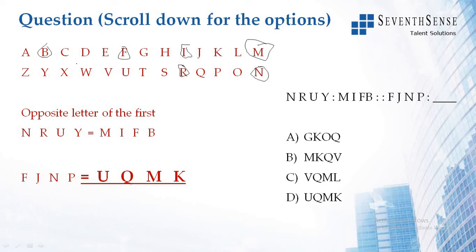So for F you have U, and then J you have Q. N you have M, and for P you have K. So that's why it is UQMK. So your answer is option D.